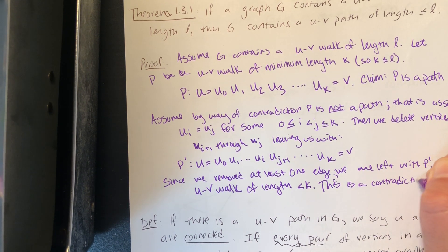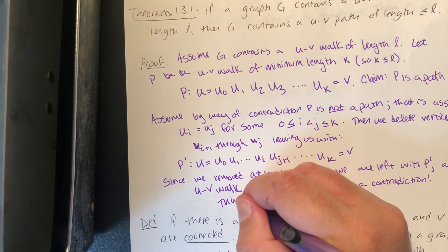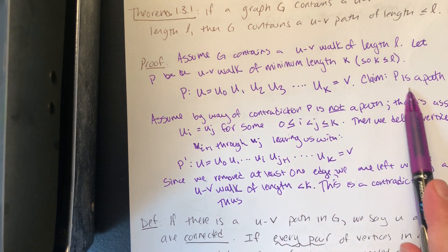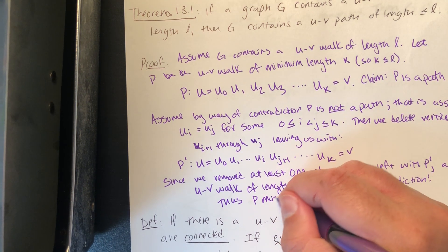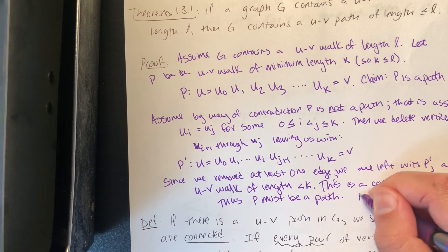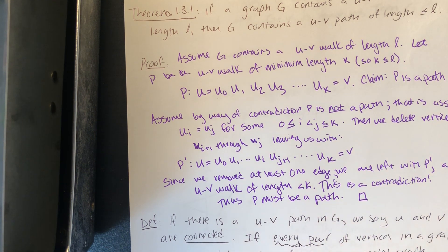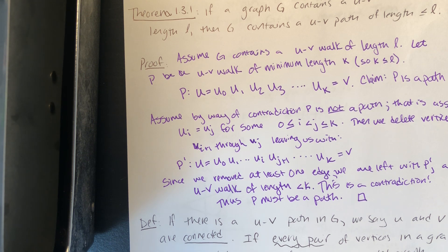Since this is a contradiction, P must have been a path all along. Therefore, if you have a u-to-v walk of length l, then there exists a u-to-v path of length k, where k is less than or equal to l.